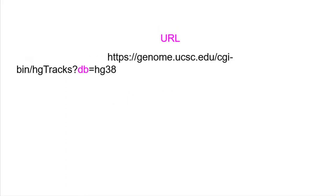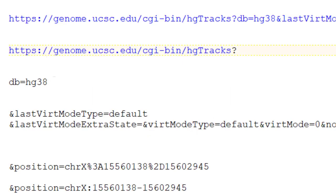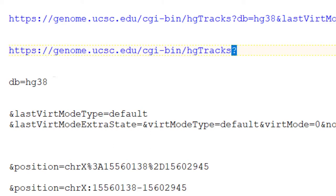Finally, the first parameter after the question mark, db equals hg38, defines the genome database we are using — human hg38. The base URL, genome.ucsc.edu/cgi-bin/hgTracks?, identifies the main browser graphic. Everything discussed here also applies to making links to our Genome Euro and Genome Asia mirrors — simply add the hyphen and locality name after the word genome. The question mark at the end of the base URL defines the beginning of the key-value pairs. You can think of them as the variables and their settings.